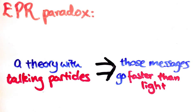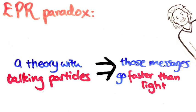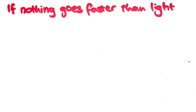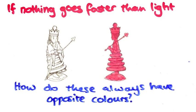So what does this mean? If Einstein and the majority of physicists at the time were right and nothing can ever go faster than light, then EPR tells us that all theories with talking particles are wrong. That includes quantum mechanics. If nothing can truly go faster than light, then how do we explain the fact that entangled particles always have opposite colors to each other?